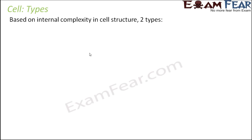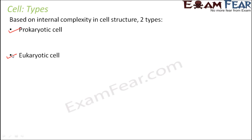Now based on the internal complexity in cell structure, there are two types of cell: prokaryotic cell and eukaryotic cell. These are the two types of cells based on the internal organization of the cell. One category of cells has specific compartments and membrane-bound cell organelles, whereas the other type of cell doesn't have it.